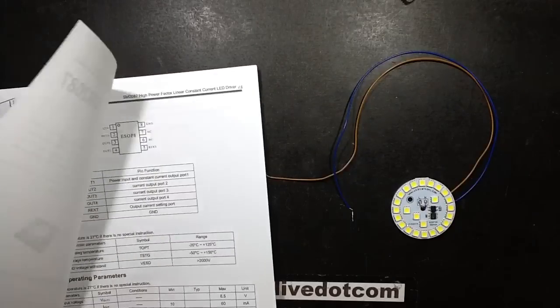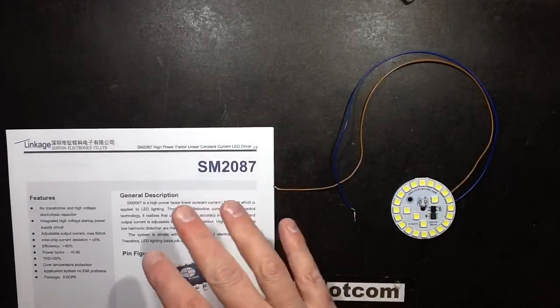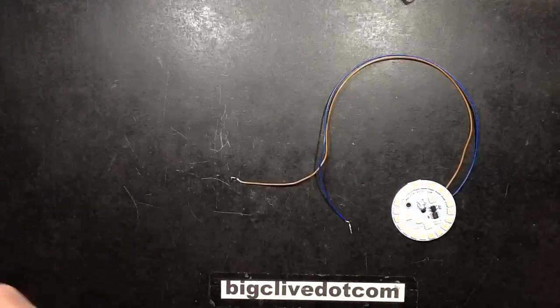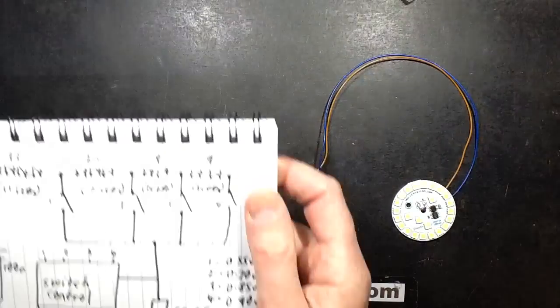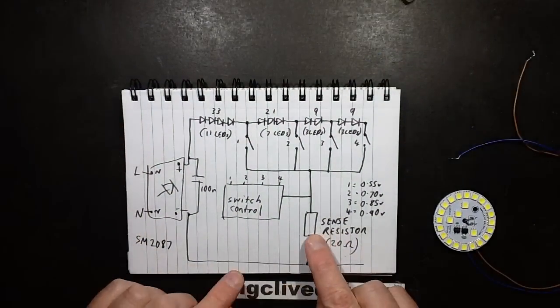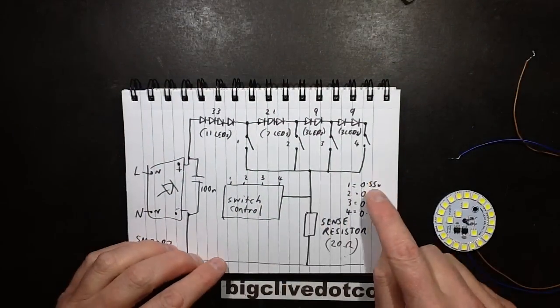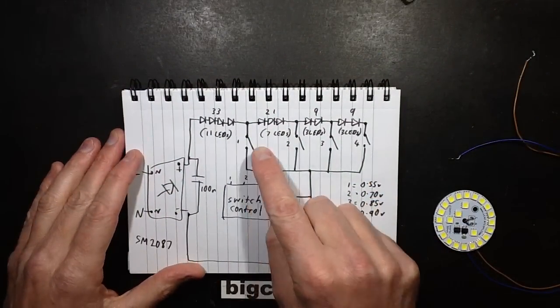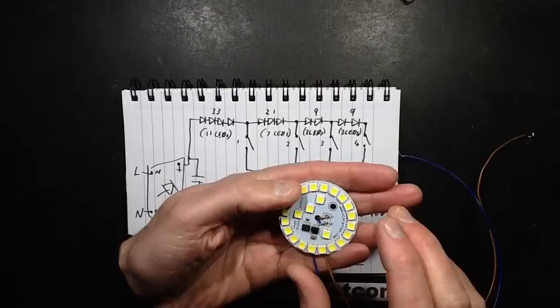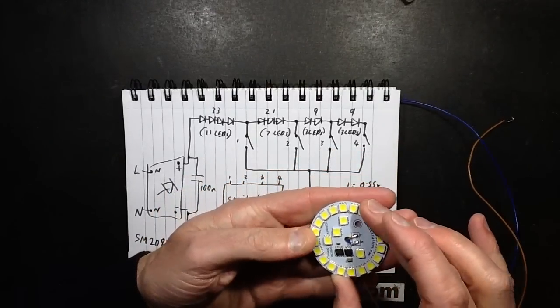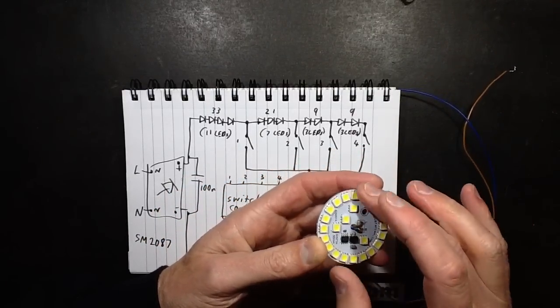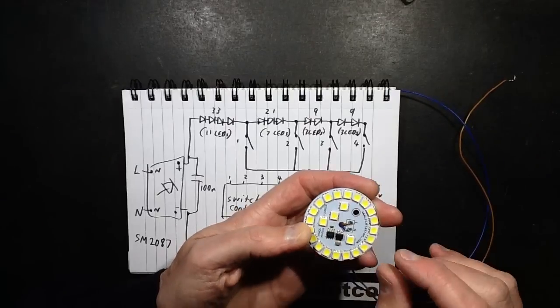From what I can see, it's not like the datasheet where it shows a block diagram of how it works. I've been trying to work that out myself. The sense resistor and various voltage levels are detected that control basically little isolated electronic switches inside this chip. This board has 24 5050 LEDs in it and these 5050 packages each contain three chips.